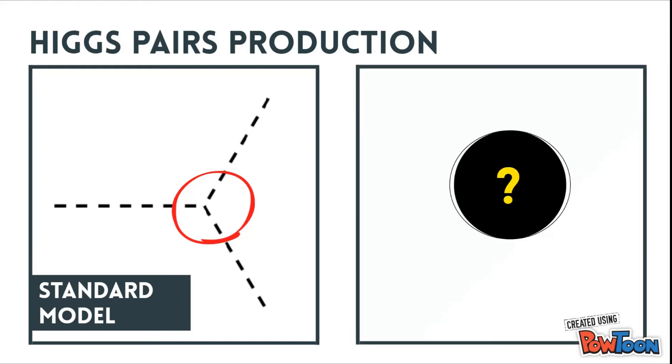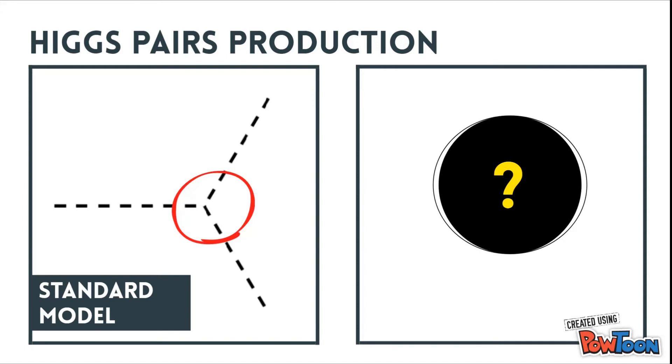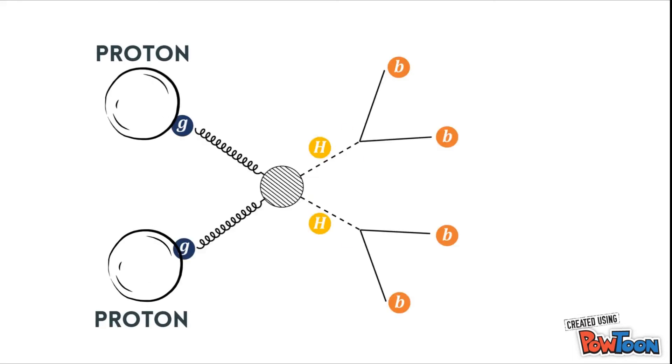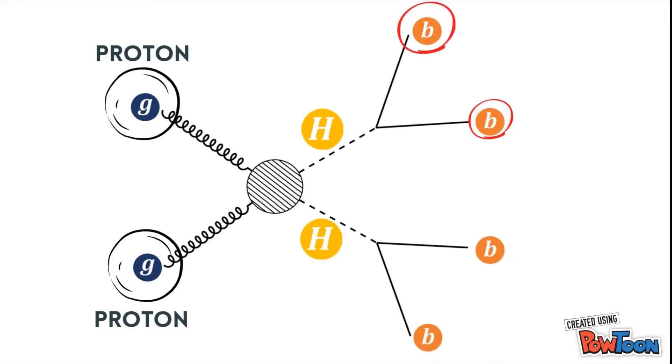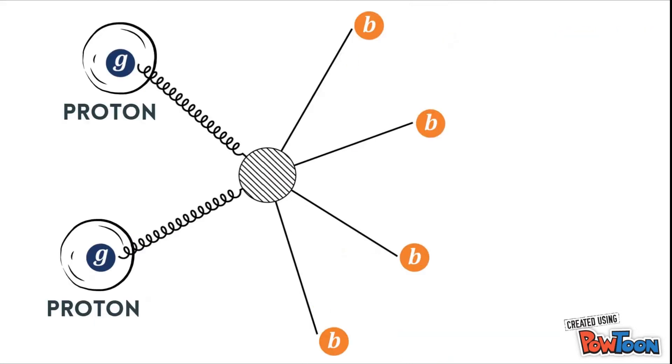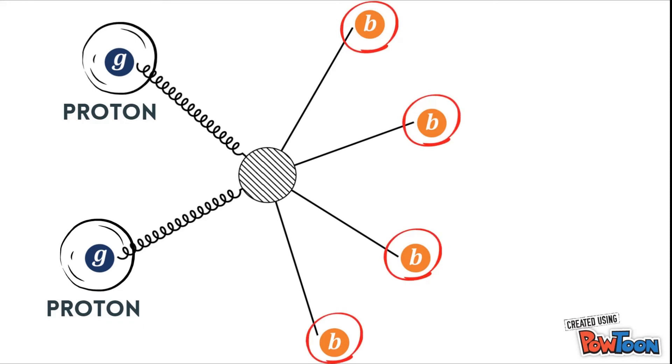It is also sensitive to the existence of new particles, which makes it suitable to probe physics beyond the standard model. The hard part of our job is isolating the process in which two protons collide and produce two Higgs bosons that then decay producing four bottom quarks. This is what we call the signal. And that is because there are other processes that can happen simultaneously that directly produce four bottom quarks. This is what we call the background.